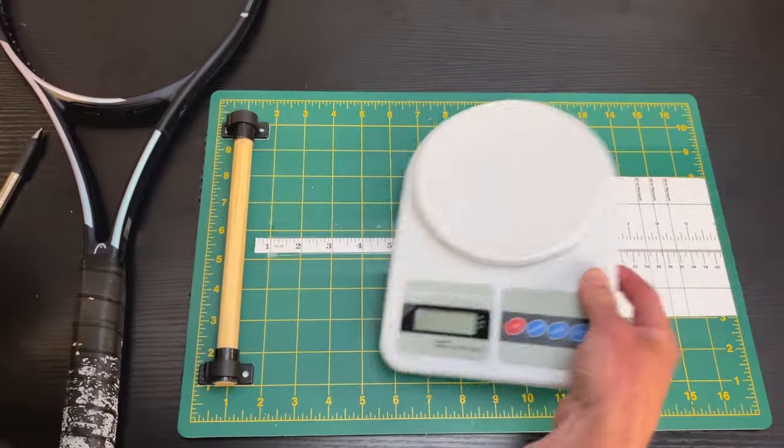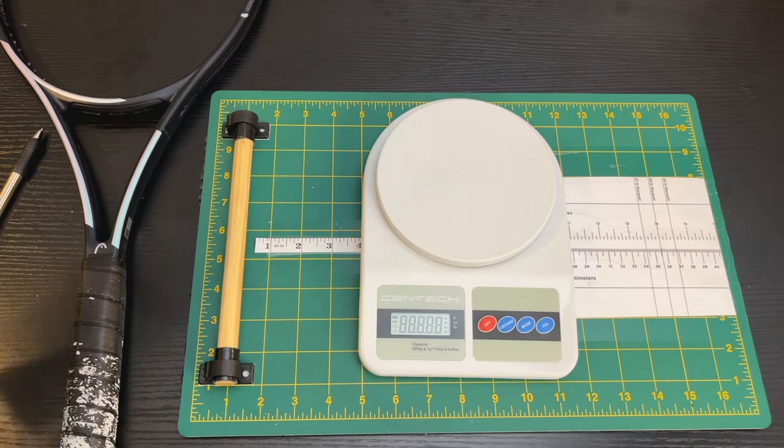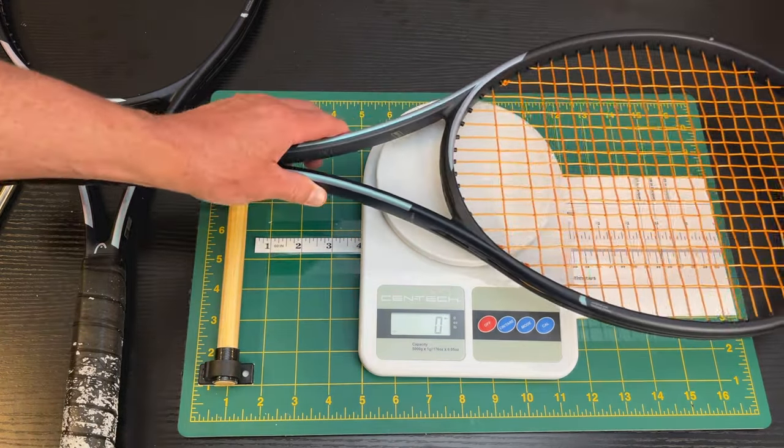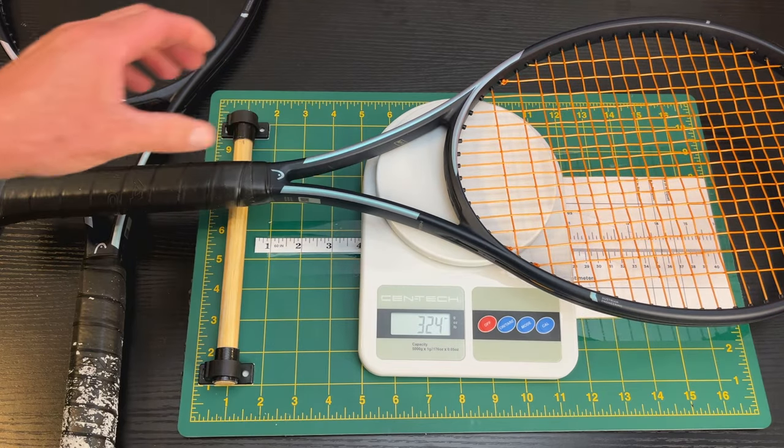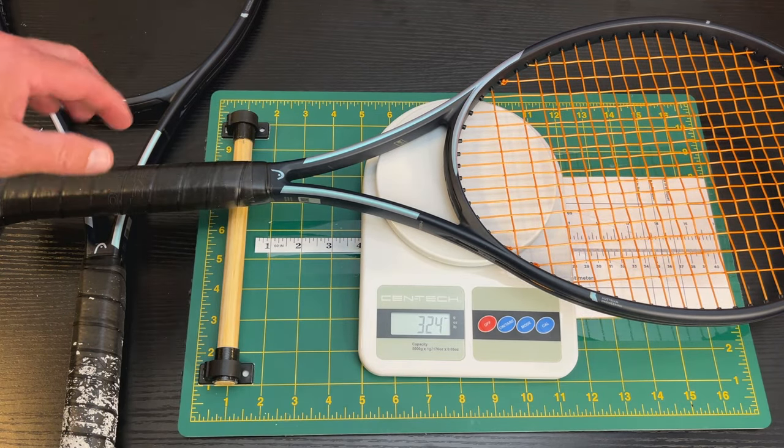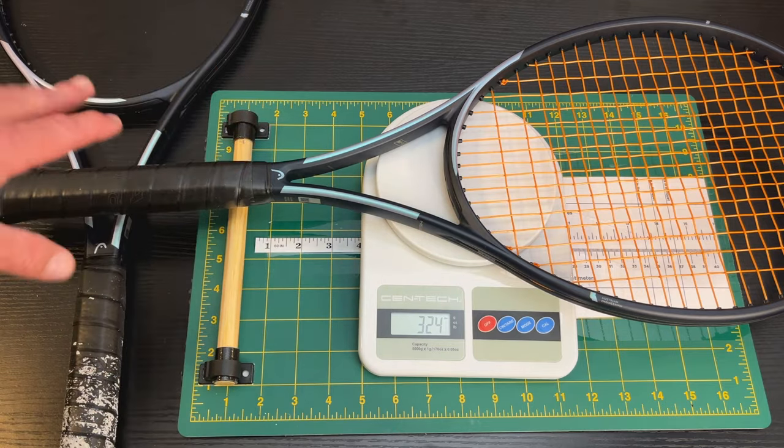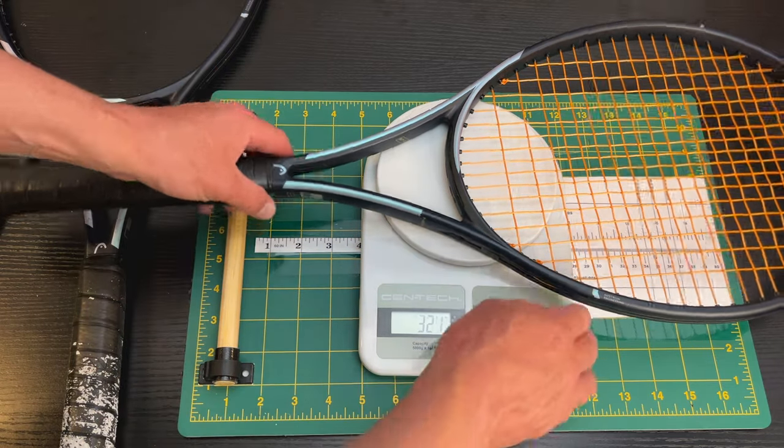Let's do a static weight. Tennis Warehouse claims it's 323. And we have 324. So pretty close. I had 323 earlier. So this is pretty much on spec in terms of static weight.